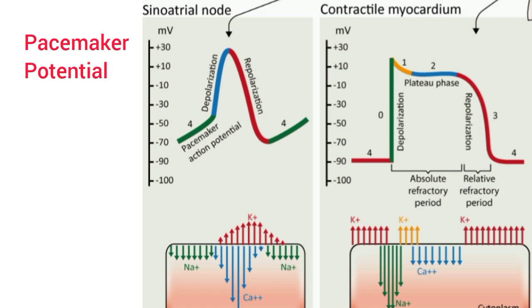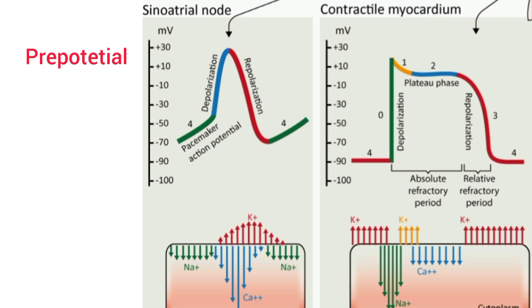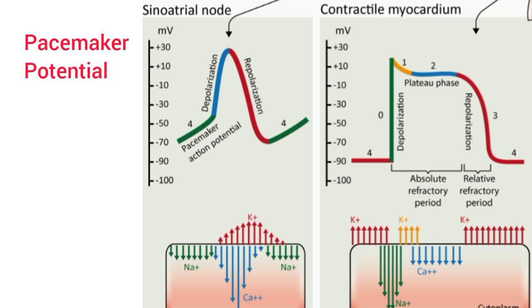Pacemaker potential is the unstable resting membrane potential in the SA node. It is also called the pre-potential. The electrical potential in the SA node is different from that of other cardiac muscle fibers. In the SA node, each impulse triggers the next impulse, mainly due to the unstable resting membrane potential. The resting membrane potential in the SA node has a negativity of minus 55 to minus 60 mV, which is different from the negativity of minus 85 to minus 95 mV in other cardiac muscle fibers.